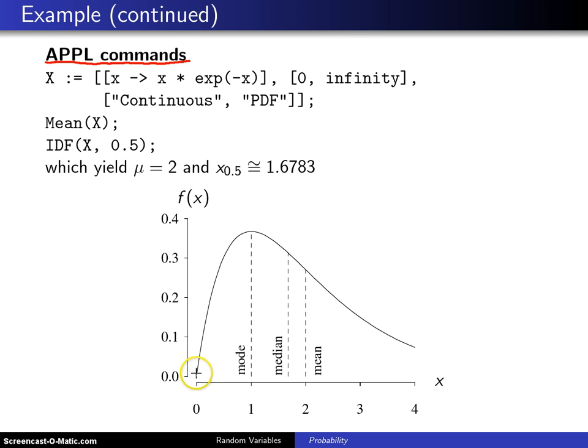Here is a picture of the probability density function xe^(-x). Notice the mode is the point where the tangent line is horizontal, so the population mode is 1. The population median is the value with an area of 0.5 to the left and 0.5 to the right, which is 1.6783.